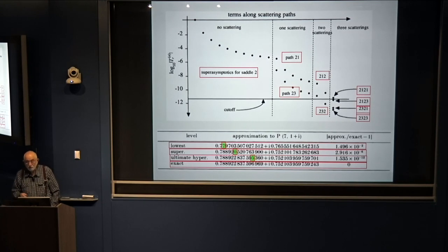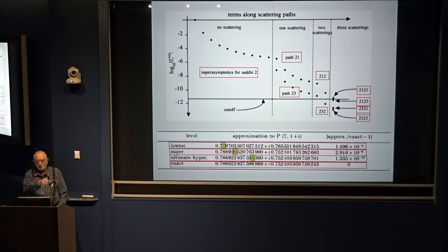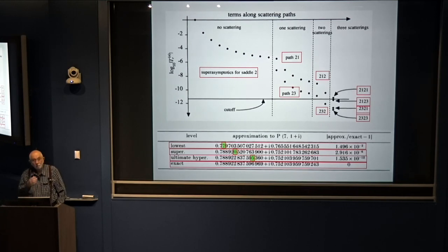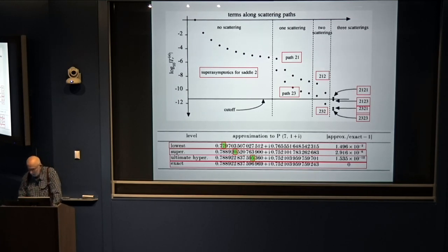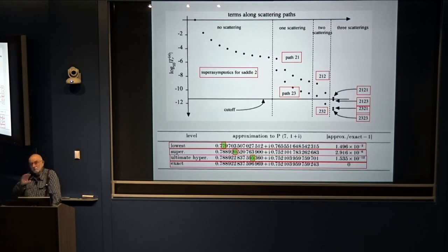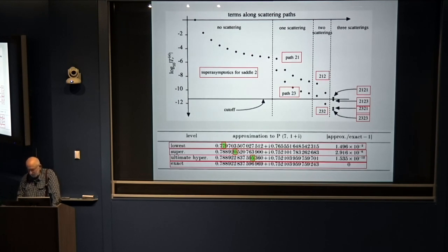You could have integrals that don't have saddles but where dominant asymptotics come from endpoints or poles — there are many different cases in traditional asymptotics where all these ideas apply, mutatis mutandis with different degrees of sophistication.